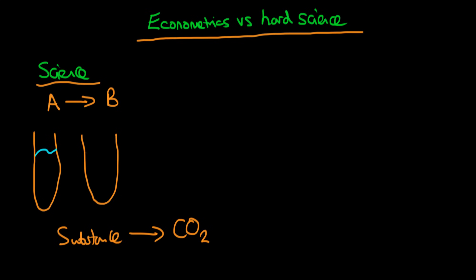In science, what we would do is create one test tube labelled the experiment and another labelled the control. Within the experimental test tube we would have our water but also put our substance of interest, whereas in the control we would just put water. We would then measure if any CO2 was produced in both test tubes.